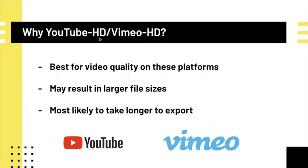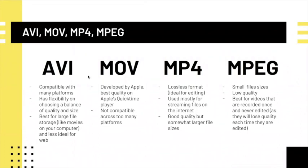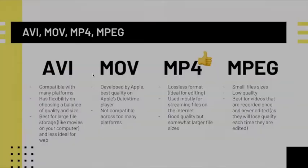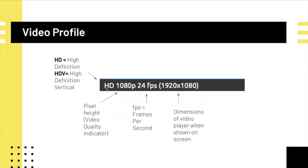Why you would want to use Vimeo HD or YouTube HD is that if you're uploading directly to those platforms they're going to give you the best video quality overall, though they might be a bit larger in file size and take a little longer to export. In terms of what we're uploading to Learn, for simple teaching videos your best bet is probably the MP4 type. The HD section just means high definition and is usually in wide screen — your normal video format on your laptop. If you see HDV that means vertical, so this would be important if you're posting to an Instagram video.